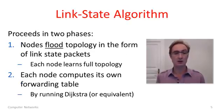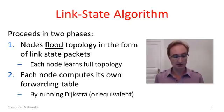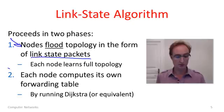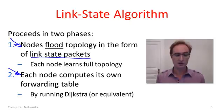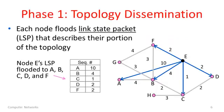Now, what about the link state algorithm? There are two phases. In the first phase, each node floods information about its local portion of the topology to everyone else using link state packets. In this way, every node will get a picture of the full topology. Then in phase two, each node computes its own routes and forwarding table. The first step uses flooding and the second step uses Dijkstra's algorithm — link state really just combines these two.